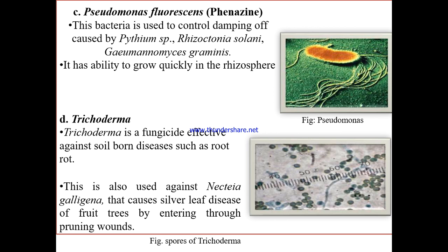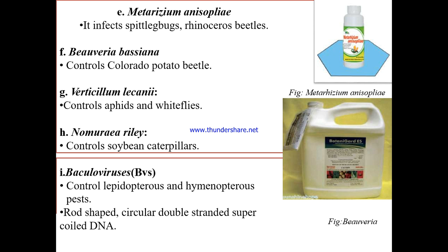Trichoderma is a fungicide effective against soil-borne diseases such as root rot, Nectria galligena (silver leaf disease), and root rots. Metarhizium anisopliae infects spittle bugs and rhinoceros beetles. Beauveria bassiana controls the Colorado potato beetle, and Verticillium lecanii controls aphids and whiteflies. Nomuraea rileyi controls soybean caterpillars. Baculoviruses control Lepidopteran and Hymenopteran pests. Metarhizium, Beauveria, and Verticillium are all fungal organisms used to kill pest insects in agricultural fields.